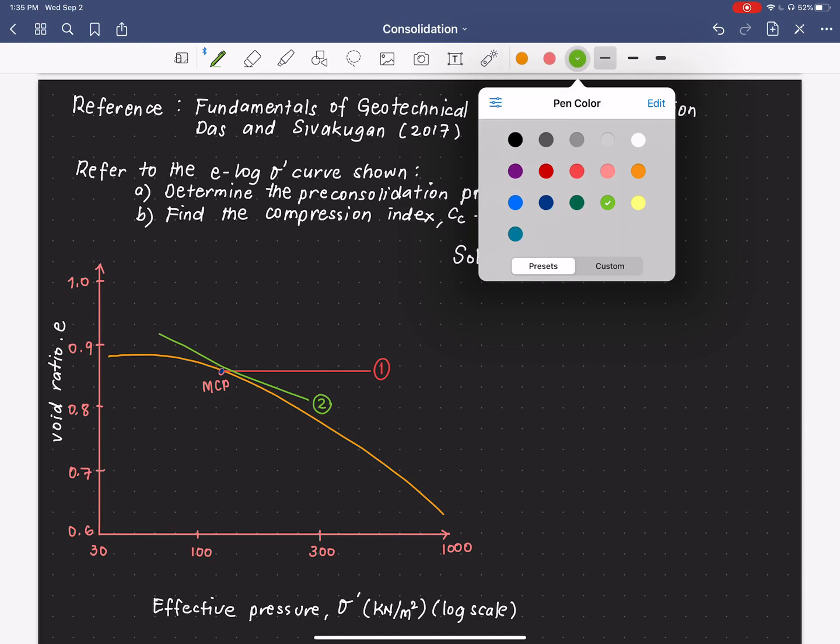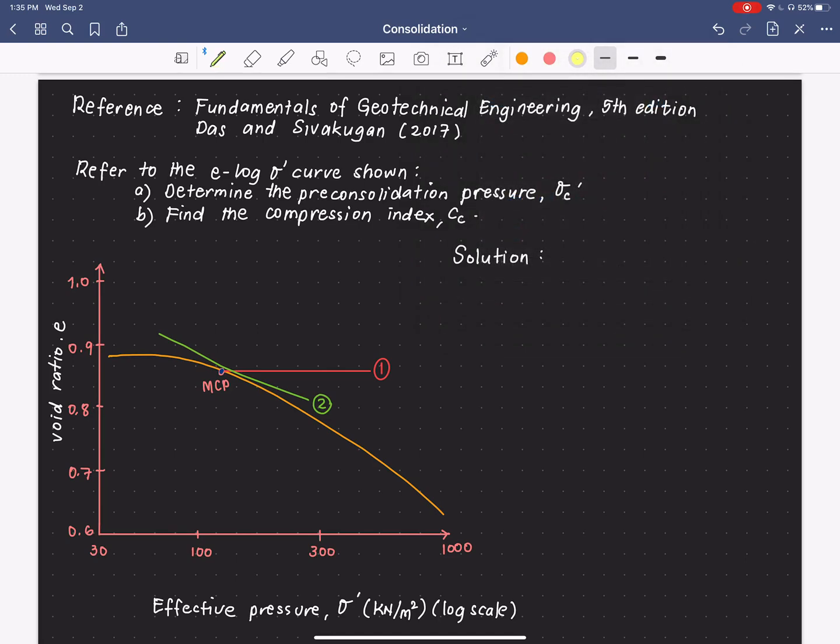The next step is to draw a bisector line of one and two. So, we draw a line at the center of line one and line two. And this is our bisector or the third step.